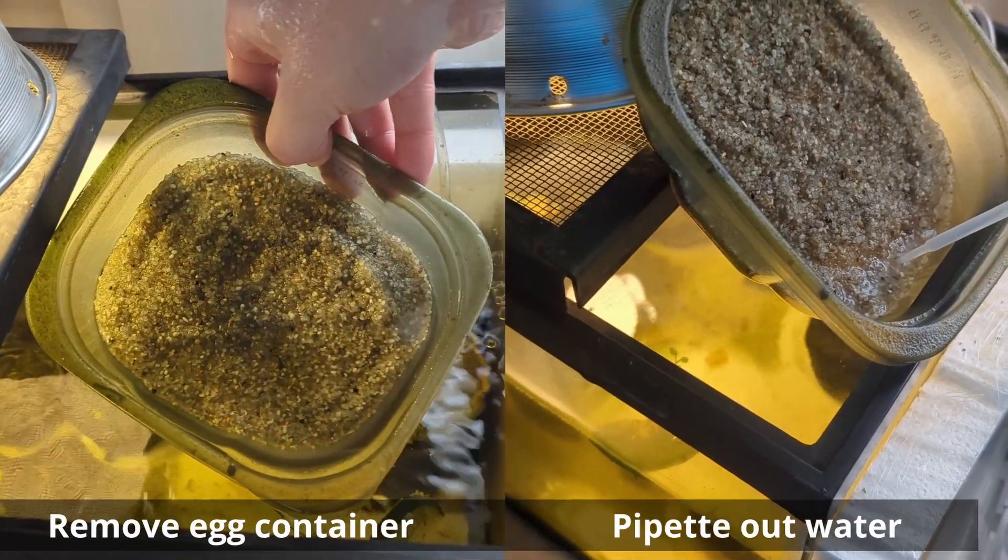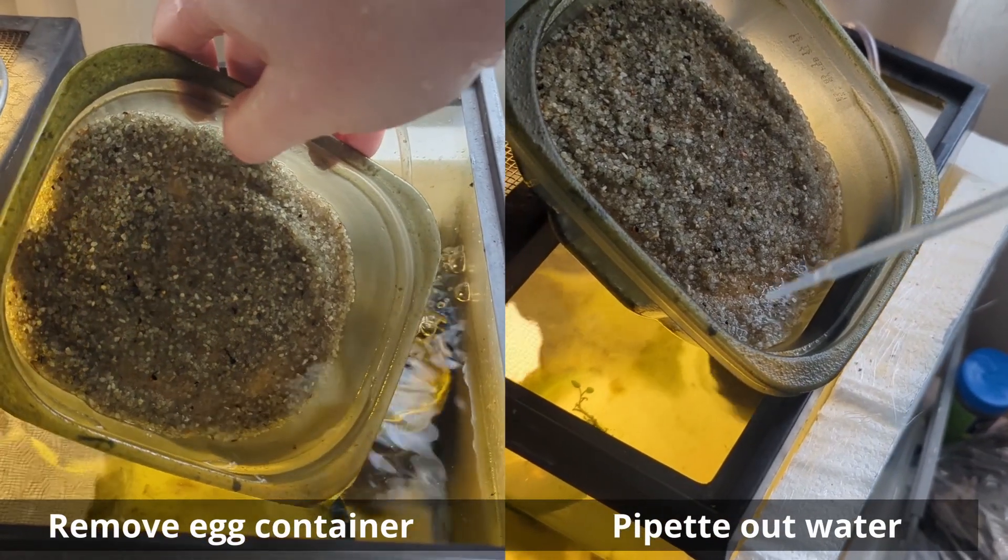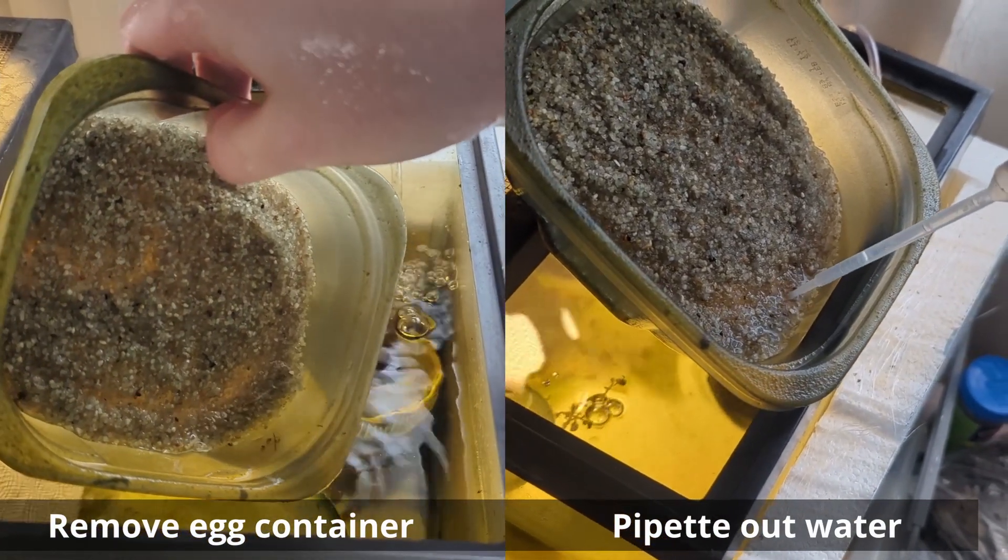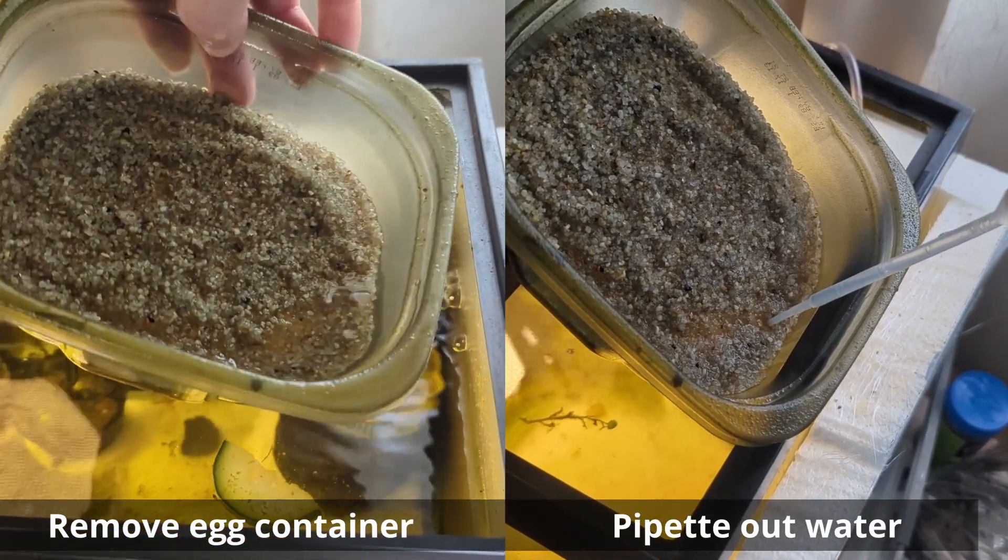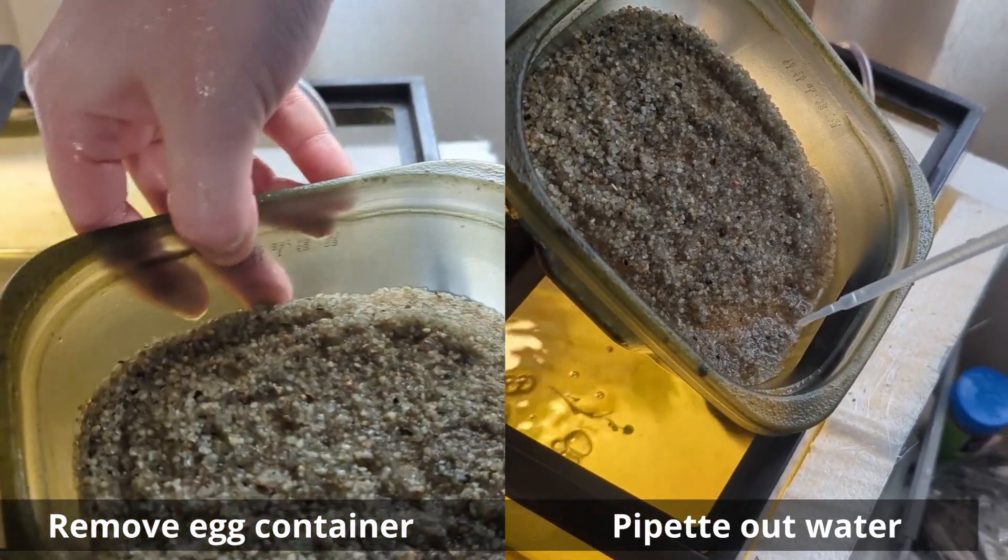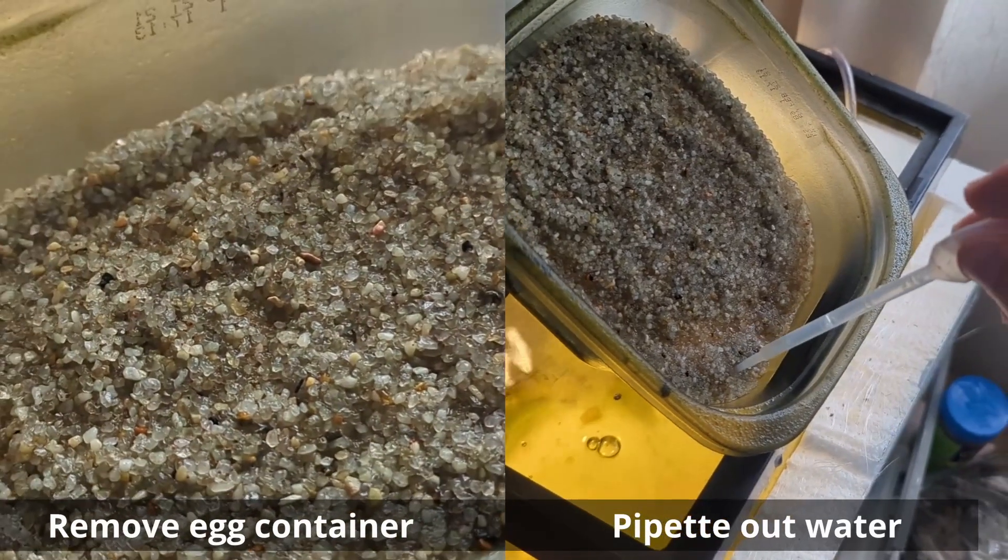The first thing you're going to need to do is take out your egg container from your aquarium, whether all your triops have died or you just want to replace that container. After removing the container, you can use a pipette to go deep in the sand and get all the water out to decrease the drying process.